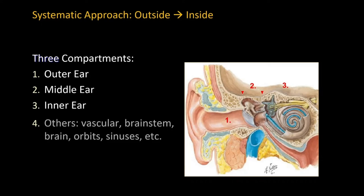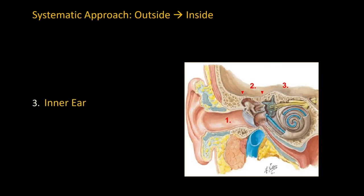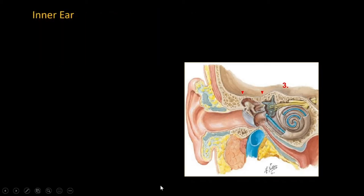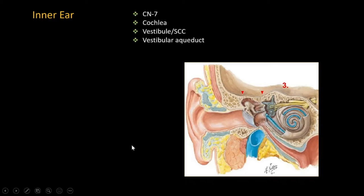That is the middle ear structure. Let's focus our attention to the last compartment, the inner ear. The inner ear also shares lots of intricate anatomy, and we're going to go through some of the basic ones that you need to know and inspect on every single study of temporal bone. I will look at the facial nerve, the cochlea, vestibule, and semicircular canal. Lastly, I will look for the caliber of the vestibular aqueduct.